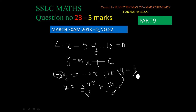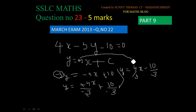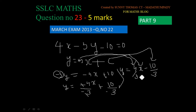Rearranging: y equals 4 by 3 times x minus 10 by 3. So m equals 4 by 3, and c equals minus 10 by 3. The slope is equal to 4 by 3.